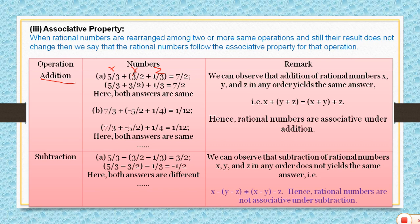Let's take an example for addition. x is 5 by 3, y is 3 by 2, z is 1 by 3. In associative property we form groups. First I made a group of y and z — that is, I put a bracket around 3 by 2 plus 1 by 3. By BODMAS rule, the bracket is solved first, and then the result is added to 5 by 3 outside. The answer is 7 by 2.